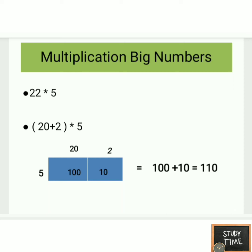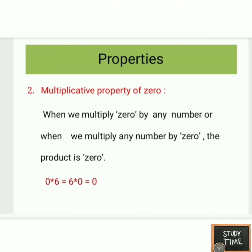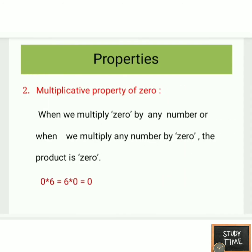In this way we can make multiplication simpler. Next are the properties. Multiplication has a few properties. The product of two numbers remains the same even if the order is changed — for example, 3 cross 4 equals 4 cross 3, that is 12. So irrespective of the order, the product remains the same. Next is the multiplicative property of zero: when we multiply any number by zero, the product is zero.